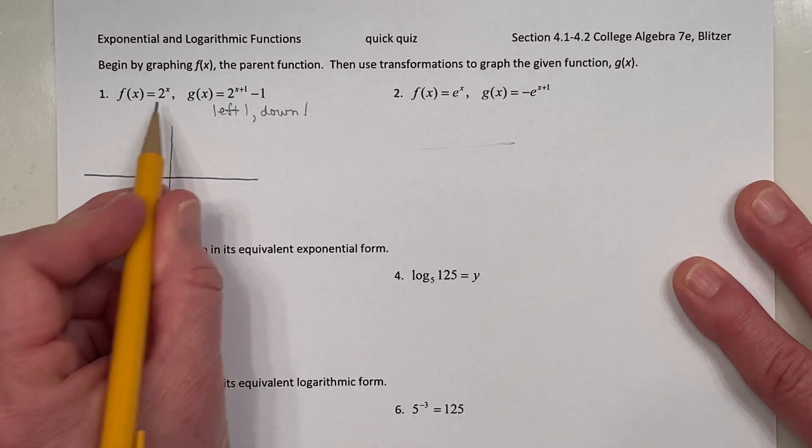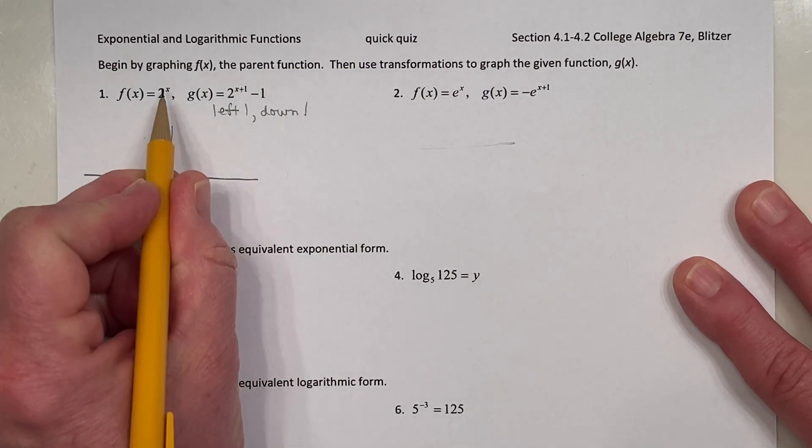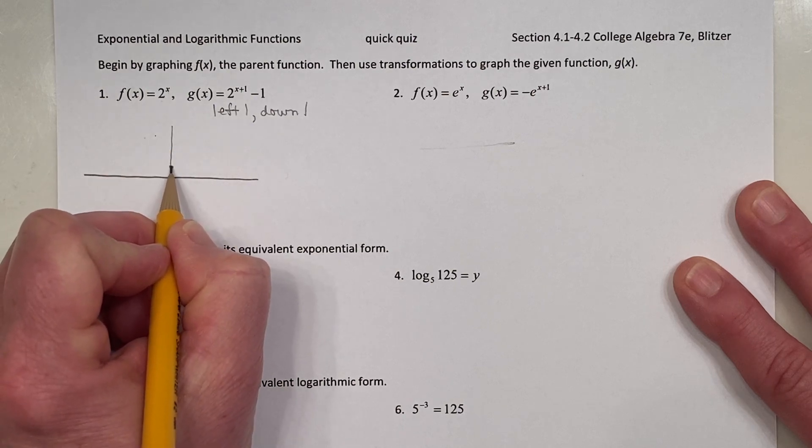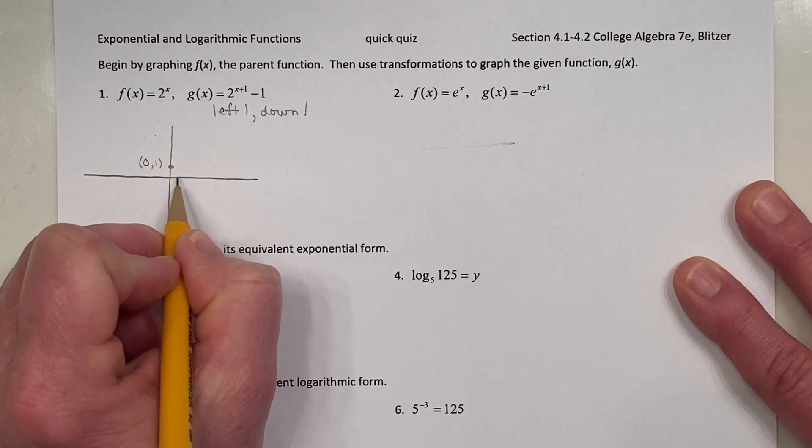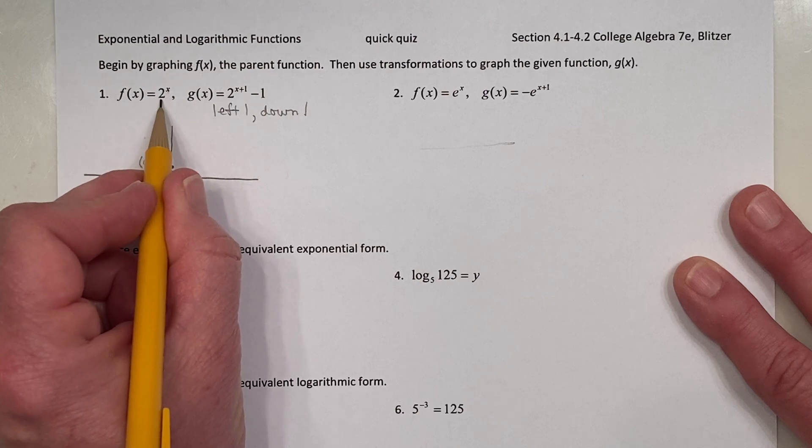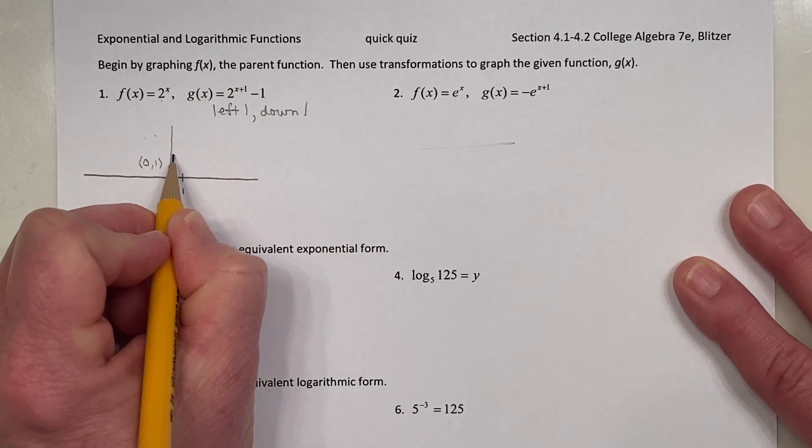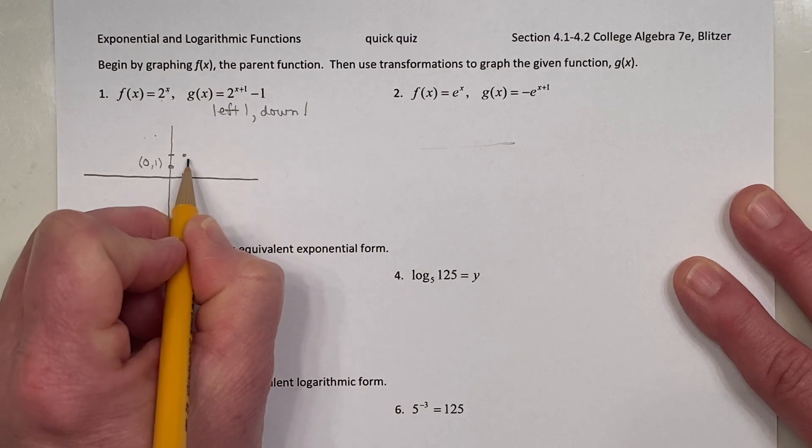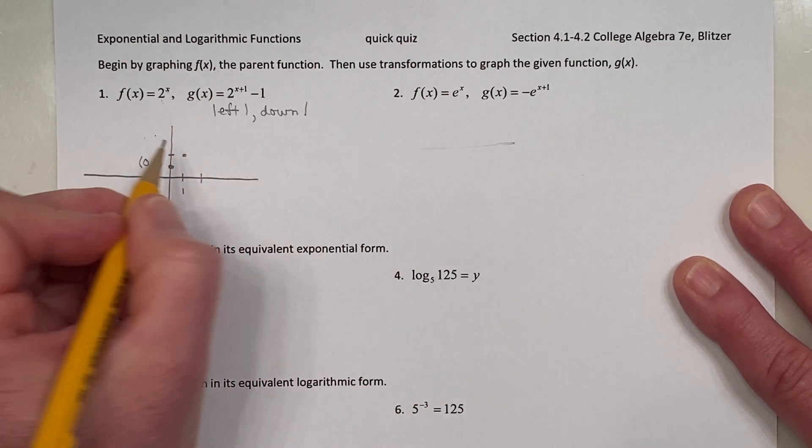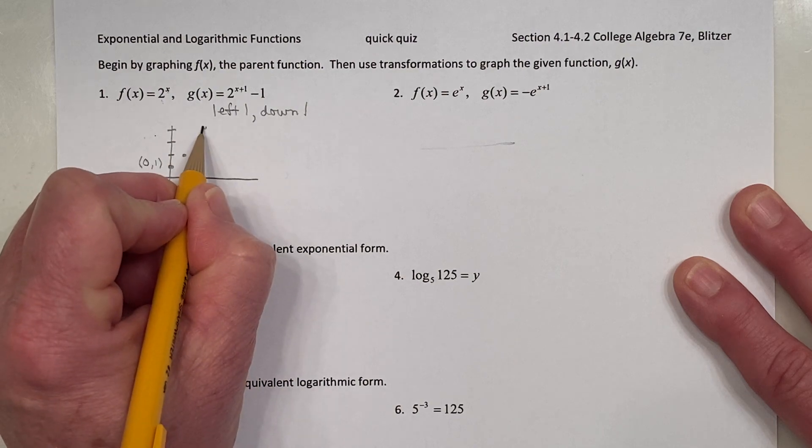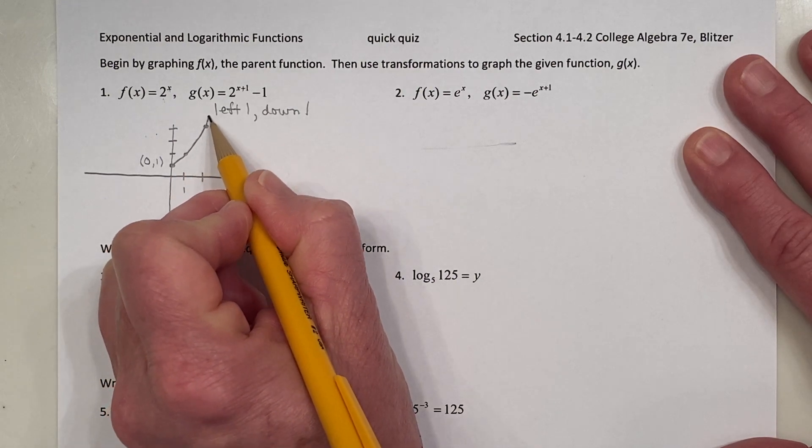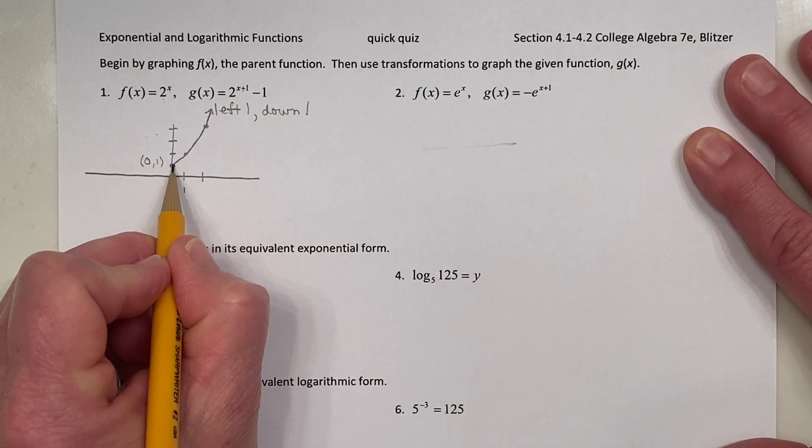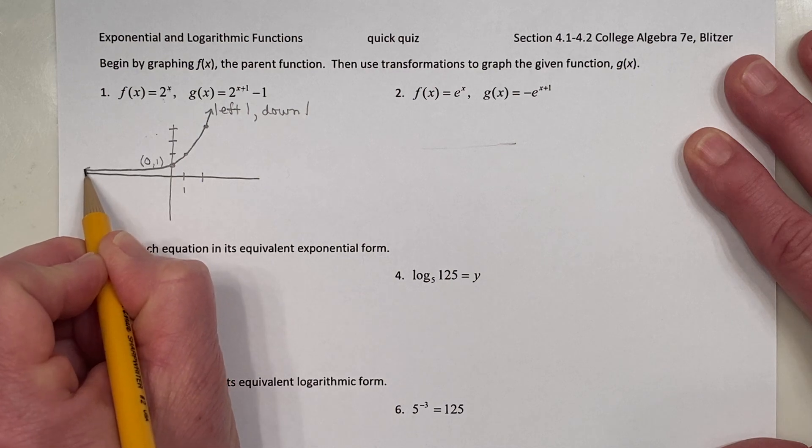For something like this, you'd be provided a grid to work off of, but let's go ahead and draw that coordinate plane. Graphing y equals 2 to the x, you might remember that when x is 0, the output is 1. It'd be good to go ahead and at least label one point on both the x and y axis so I can understand the scaling. When x is 1, the output is 2. When x is 2, the output is 4.